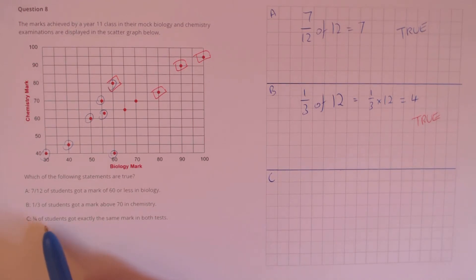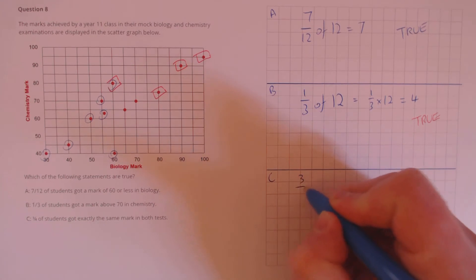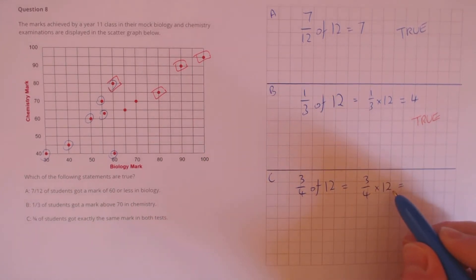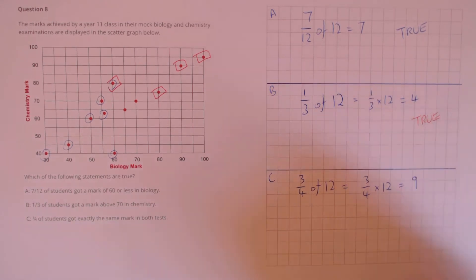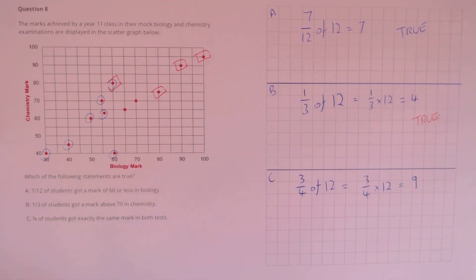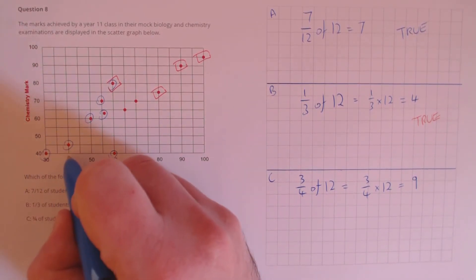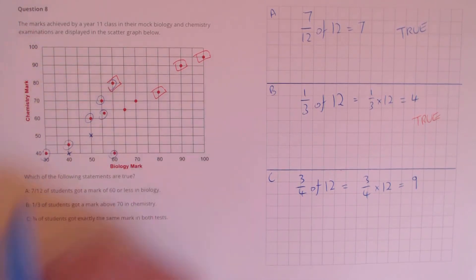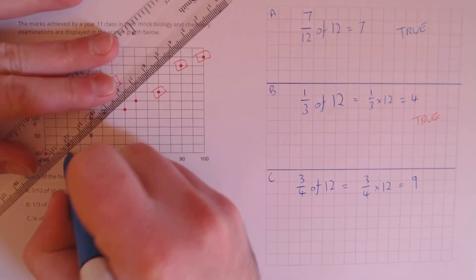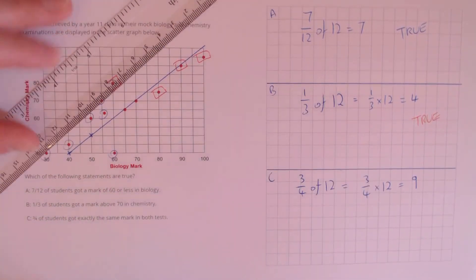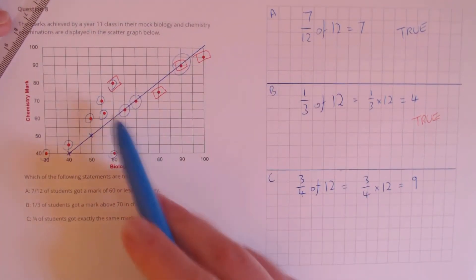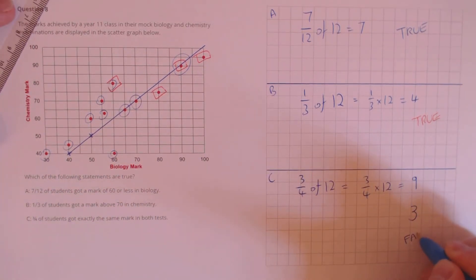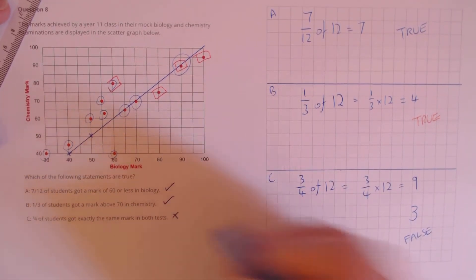For statement C, three-quarters of students got exactly the same mark in both tests. Three-quarters of 12 is 9. To find students who scored the same in both tests, we plot the line where biology equals chemistry. Points at 40/40, 50/50, and one more lie on this line — that's only 3 students. The claim was 9, so that's clearly false. Final answers: true, true, and false.